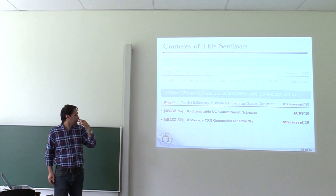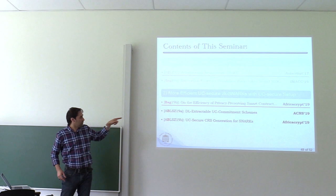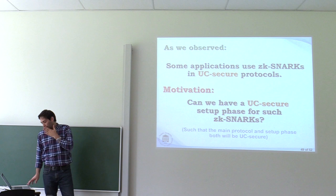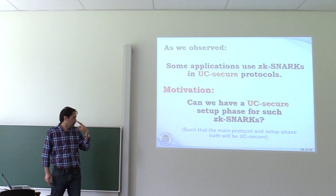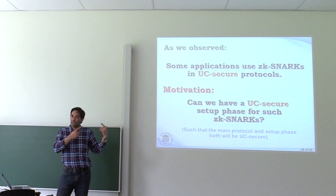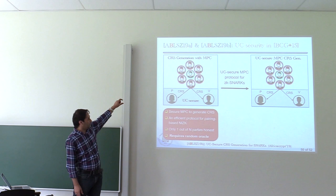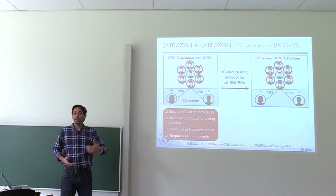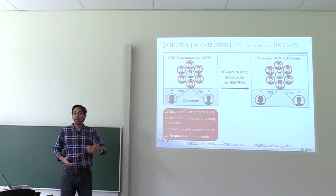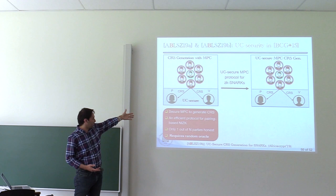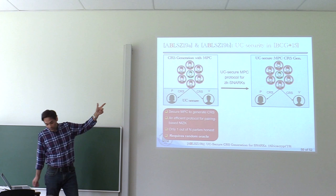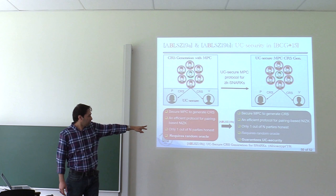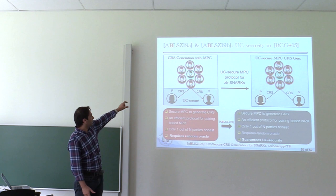We also asked: can we have a UC-secure setup phase for such SNARKs? The SNARK itself can be UC-secure, but the setup phase in the base case uses the MPC proposed by Ben-Sasson et al., which guarantees only one of N parties needs to be honest but requires a random oracle. We improved it by proposing a new construction with the same property but not requiring a random oracle, and additionally guaranteeing UC-secure setup. So we can make the whole system UC-secure — both setup phase and SNARK. To do so, we proposed a new primitive for UC-commitment schemes with a particular requirement: we commit to a message x from Z_p and later open to G^x in the bilinear group, since G^x is the element you need to give to the prover and verifier for proof generation and verification. Thank you very much.